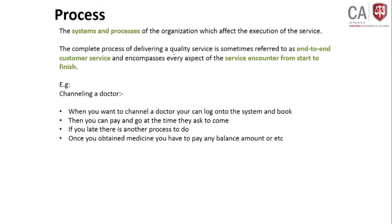Process refers to the systems and processes of the organization that affect the execution of services. For example, to become a chartered accountant there is a defined process: fill the application, submit it, pay for the examination, which is cross-checked by the examination division, then you receive an admission, sit for the examination, marking takes place, results are released and approved, published on the website — and ultimately you become a chartered accountant.